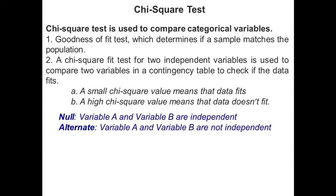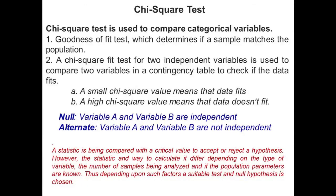As seen from all the above examples, in all the tests a statistic is being compared with a critical value to accept or reject the null hypothesis. However, the statistics and the way to calculate them differ depending on the type of variable, the number of samples being analyzed, and whether the population parameters are known. Thus, depending upon such factors, a suitable test and null hypothesis is chosen. This lecture focuses heavily on normally distributed data. Z test and T test can be used for data which is not normally distributed as well, if the sample size is greater than 20. However, there are other preferable methods to use in such a situation.